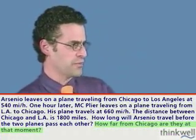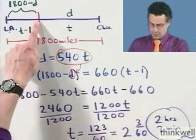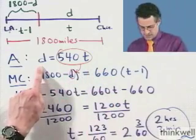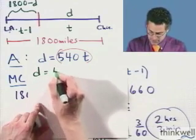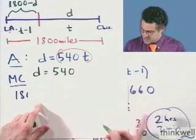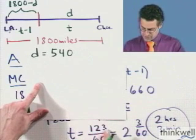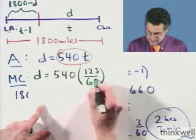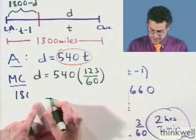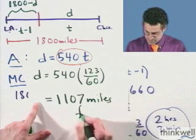The second part of the question asks, how far from Chicago are they at that moment? Well, that's asking for this distance right here. So it's saying find little d. But we can do that just using Arsenio's formula. We know that d equals 540 times T. And at that moment where they meet, we know that's going to happen at T equals 123 over 60. So I insert 123 divided by 60. And when I simplify that, that comes out to be 1,107 miles from Chicago.